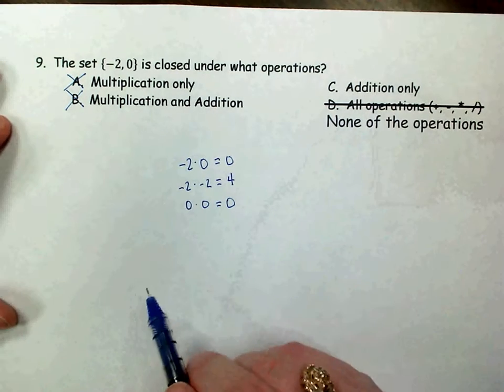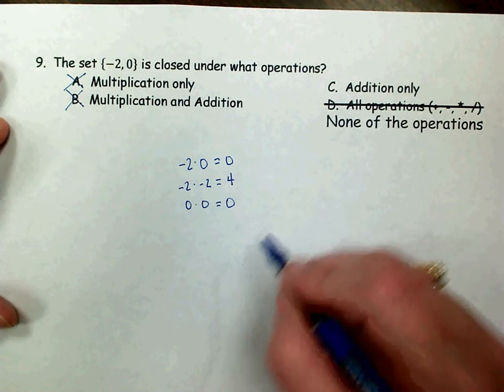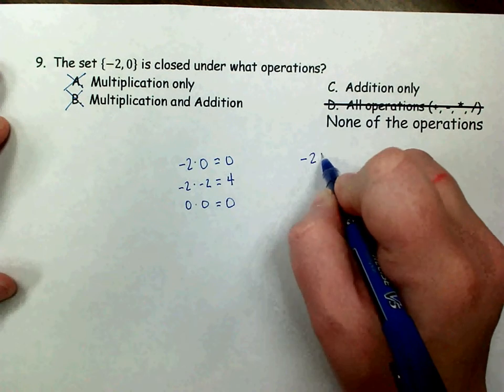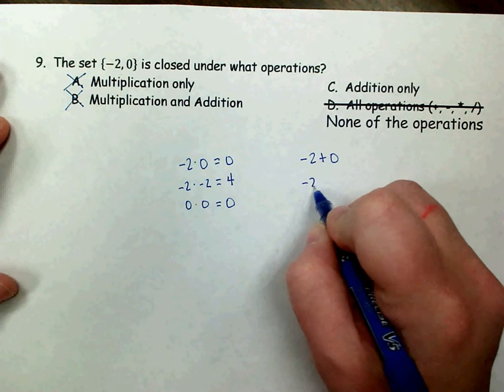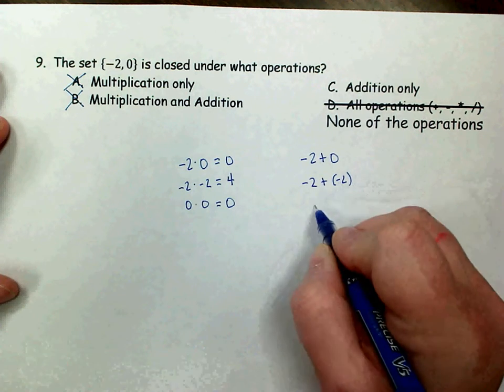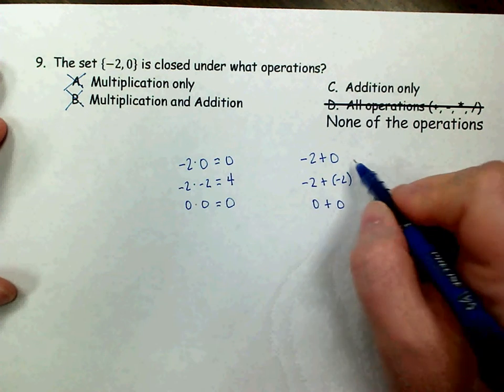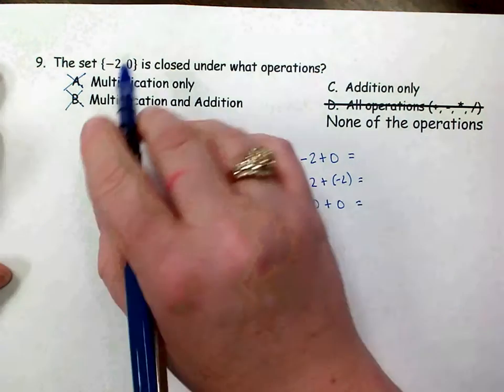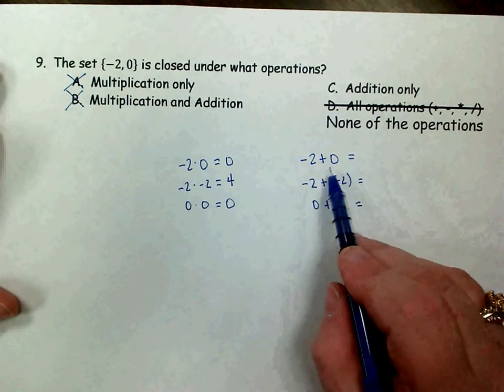C for addition. If it were closed for addition, then if we add negative 2 to 0, or negative 2 to itself, or 0 to itself, the answer will be either negative 2 or 0. Well, here we're good.